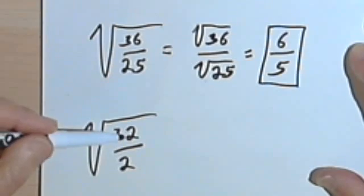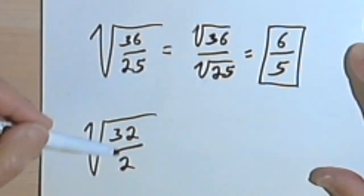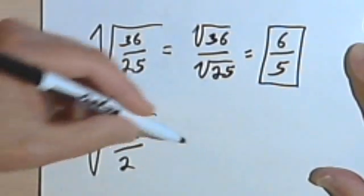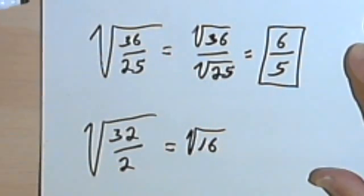look at what that fraction is, and ask yourself what would happen if I divided 32 by 2. Well, if you divide 32 by 2, you get 16. And 16 is a perfect square. 16 is 4 times 4.